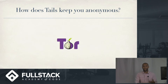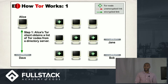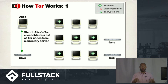So how does TAILS keep you anonymous? It uses Tor — it routes every communication right through this network. Let's assume Alice is browsing the web, and on the right side we have Jane and Bob — you can assume those are websites, jane.com and bob.com. Dave, below Alice's computer, is just a list of every encrypted node on the Tor network. Every communication, like I said, is encrypted — mostly using public and private keys.